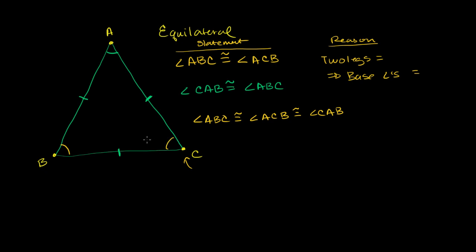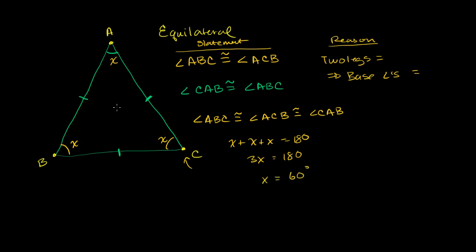You actually know what that measure is. If you have three angles that are the same, call that x, x, x, and they add up to 180, you get x plus x plus x equals 180, or 3x equals 180. Divide both sides by 3, you get x equals 60 degrees. So in an equilateral triangle, not only are they all the same angles, but they're all equal to exactly 60 degrees.